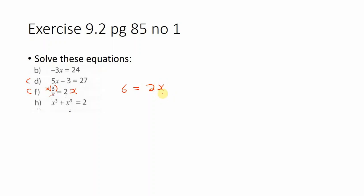Our strategy is to have x on its own, so we need to get rid of the 2. Currently we are multiplying by 2, so if we divide both sides by 2, the 2s cancel. 6 divided by 2 is 3, and we have x remaining. Therefore x equals 3.